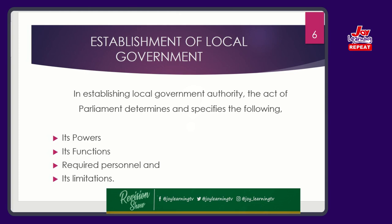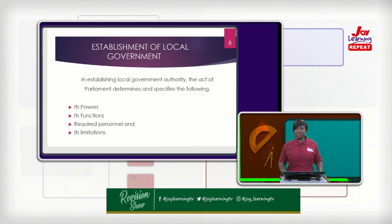One: its powers. The act of parliament will determine the powers of the local government — what it can do, the powers it can exercise, the functions it can perform, the required personnel it needs so that governance can be achieved, and democracy can be experienced right down to the local level — as well as its limitations or constraints: what it can effect and what it cannot effect. Basically, local government administration is established by an act of parliament, it is semi-autonomous — partly independent, partly non-independent — and it is monitored by the central government.